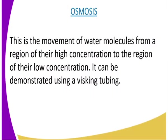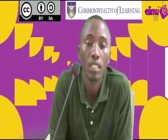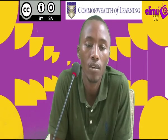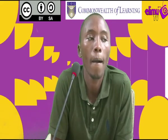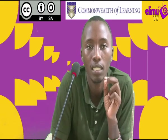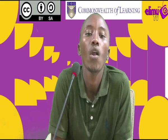We can now look at osmosis, which is a special type of diffusion that involves water molecules moving across a semi-permeable membrane. In simple terms, osmosis is the movement of water molecules from a region of high concentration to a region of low concentration. Unlike general diffusion, osmosis specifically involves water molecules and requires a semi-permeable membrane.